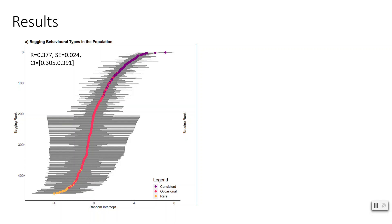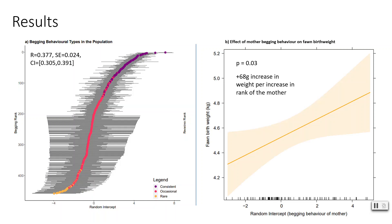In terms of fawn birth weight, you can see here that we have plotted the random intercept of the mothers on the x-axis and the fawn birth weight on the y-axis. We found that females who begged more produced significantly heavier fawns with an approximate 68 gram increase in fawn birth weight per increase in rank of the mother.